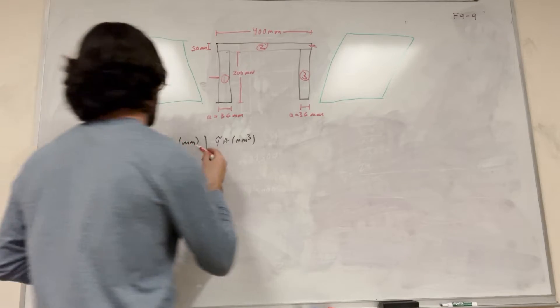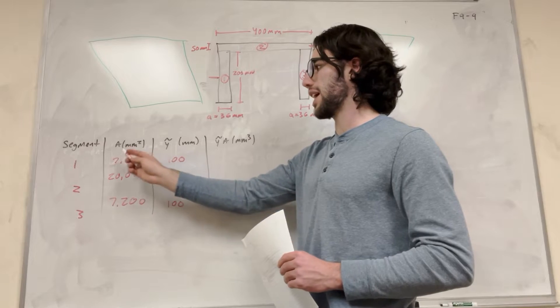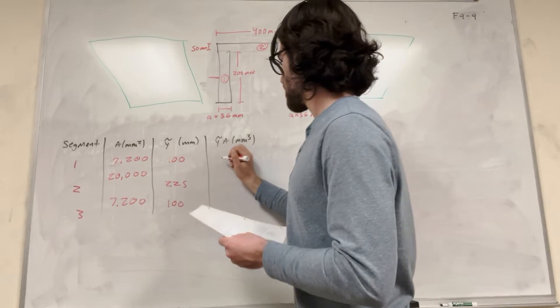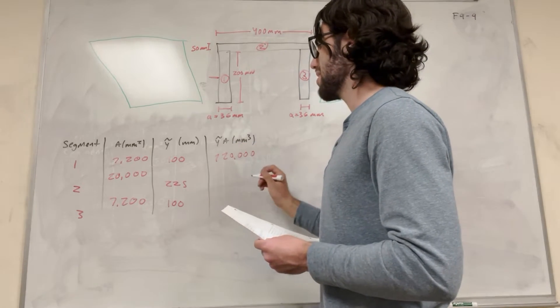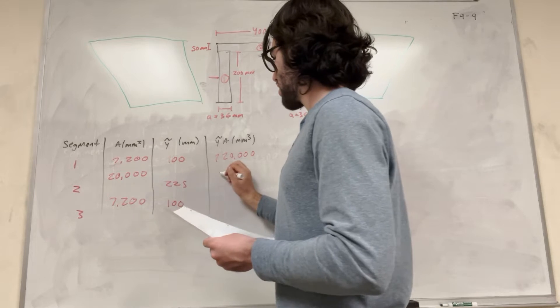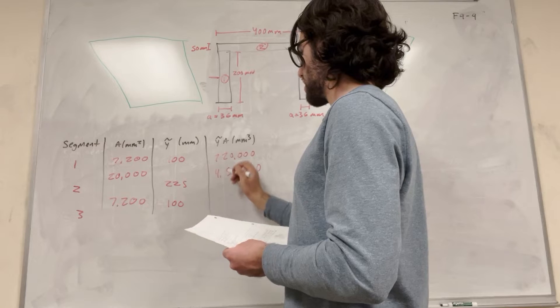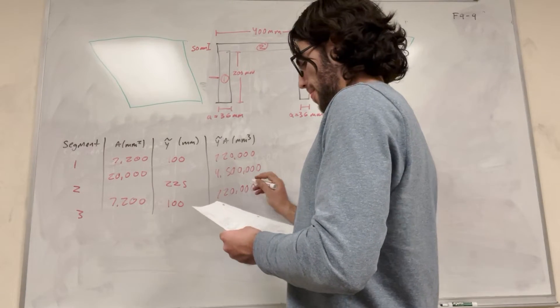So then, the final part here is y tilde times a, so multiplying y tilde times the area of each segment. So all you have to do is multiply this by 100, simply 720,000. Multiplying these two numbers together, you get 4,500,000. And then this is the same as that, 720,000.